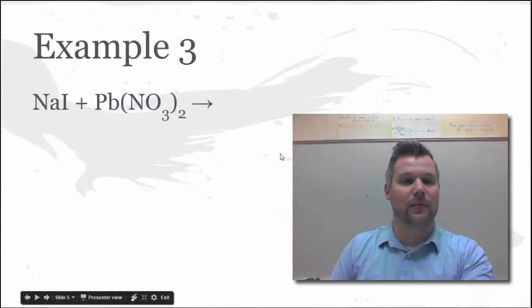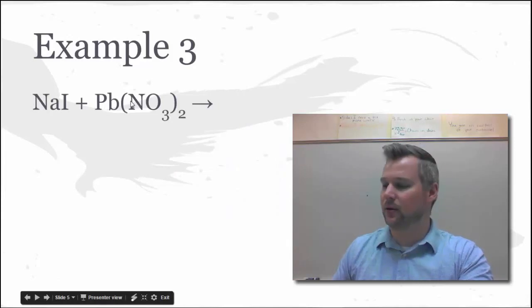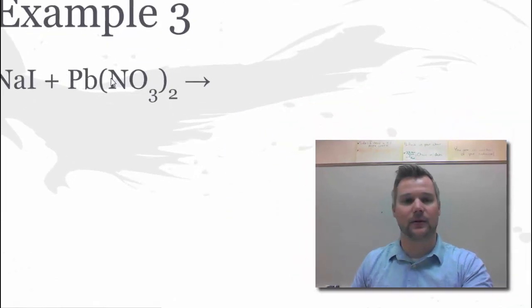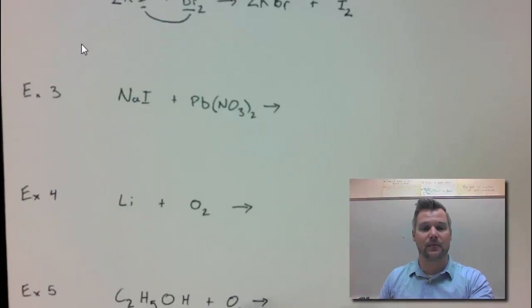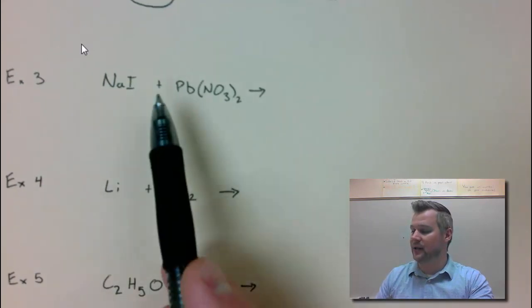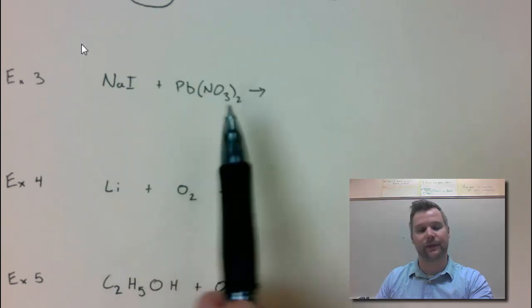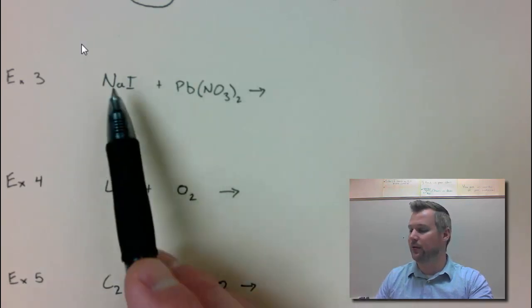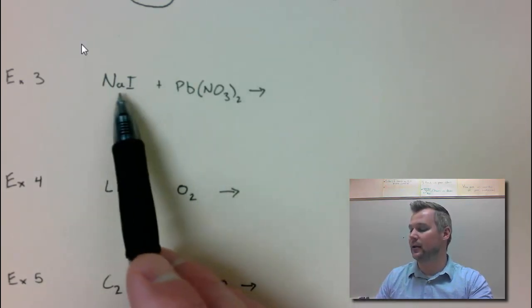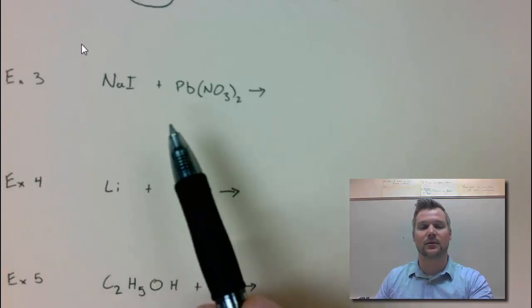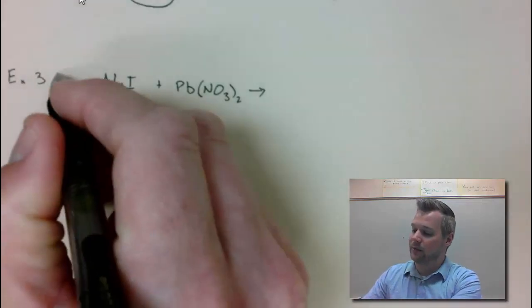My third example problem. I have more complicated looking formulas going on here. I know it's not one reactant because I see a plus sign. My second question is, is O2 a reactant? Nope. My third question, are both reactants ionic? That's ionic, that's ionic. So this is going to be a double replacement reaction.